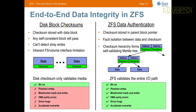Currently with disk block checksums, you have a block of data with its own checksum — that's it. The checksum is stored within the data block itself. Any self-consistent block will pass, so you could get an alteration of data where the checksum is still valid. It can't detect stray writes, and there's an inherent file system to volume interface limitation. The disk checksum only validates the media — the bit rot itself — and can't detect any of these other problems.